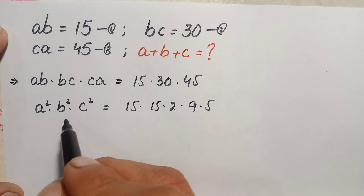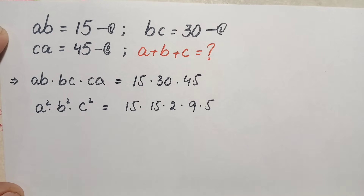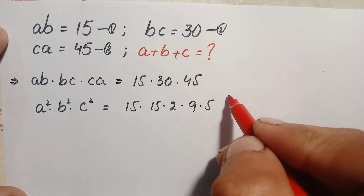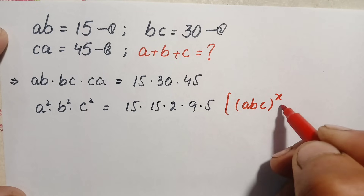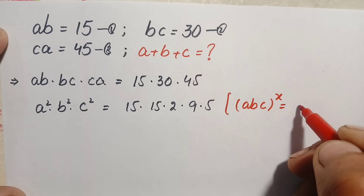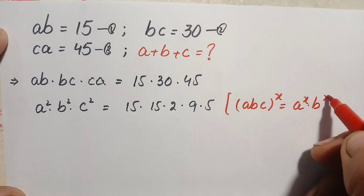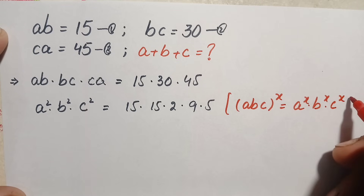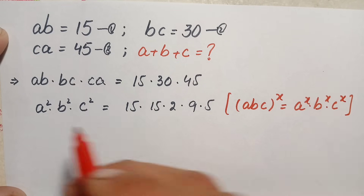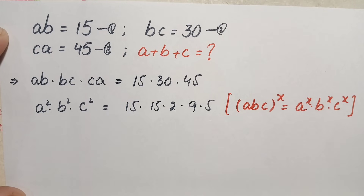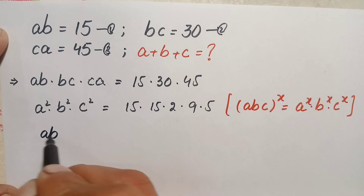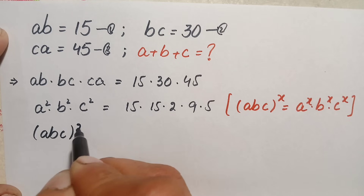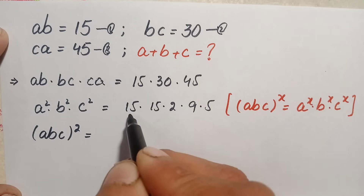We apply the algebraic exponential identity: (a·b·c)^x equals a^x times b^x times c^x. Using this, the left-hand side becomes (a·b·c)² equals the product of the right-hand side values, which we simplify as 15 squared times 3 squared times 10.